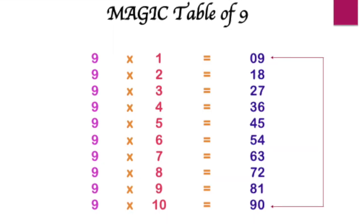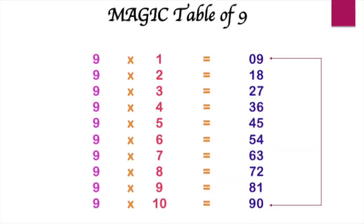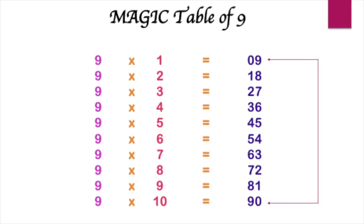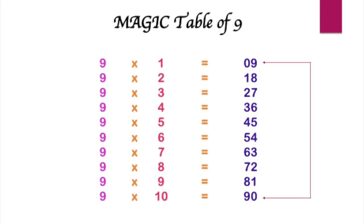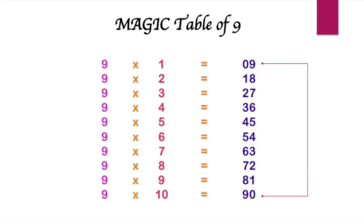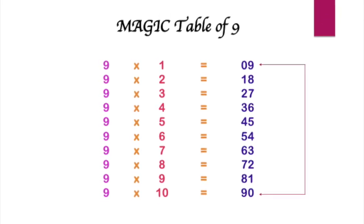Observe the first and the last multiple on the screen. 9 multiplied by 1 is 9, which can be written as 0 and 9. And 9 multiplied by 10 is 90, which is written as 9 and 0.